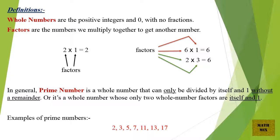2 times 3 equals 6, so 2 and 3 are factors. In general, a prime number is a whole number that can only be divided by itself and 1 without a remainder. Or it's a whole number whose only two whole number factors are itself and 1.